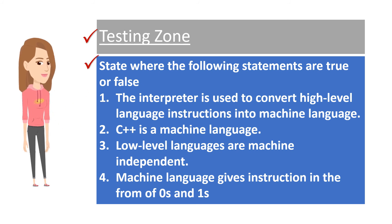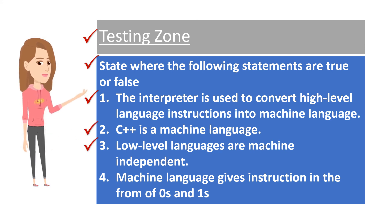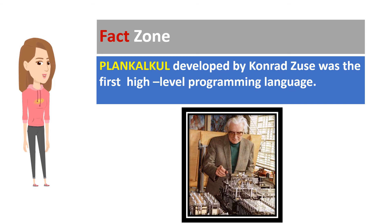Testing Zone: State whether the following statements are true or false. 1. The interpreter is used to convert high-level language instructions into machine language. 2. C++ is a machine language. 3. Low-level languages are machine independent. 4. Machine language gives instructions in the form of zeros and ones.